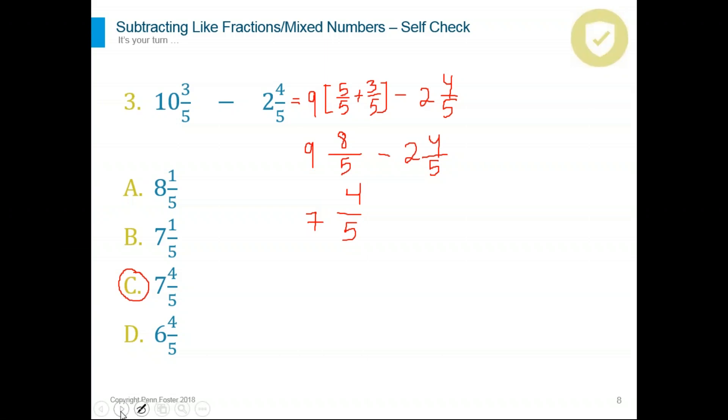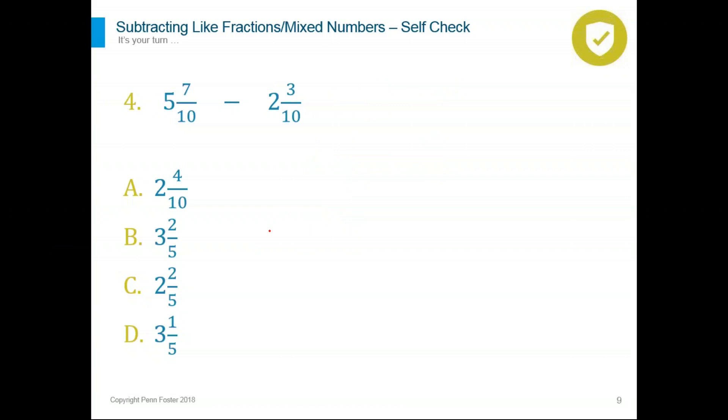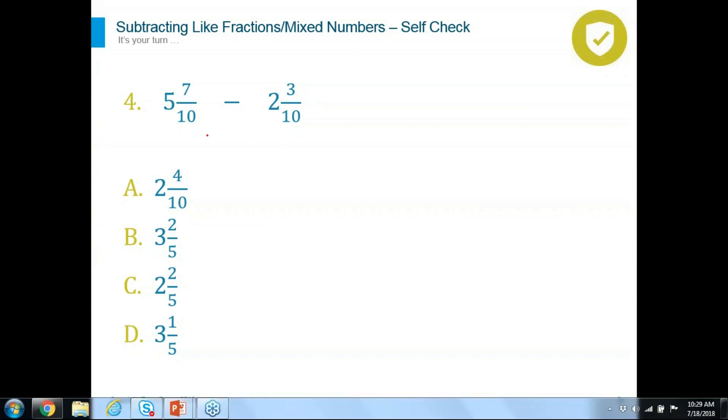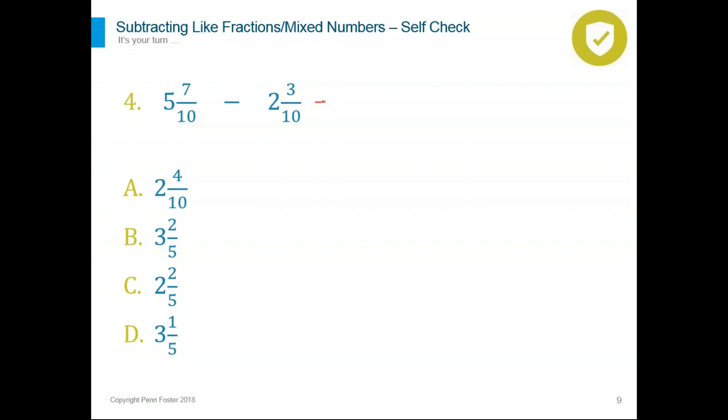Let's go ahead and do another question with subtraction. 5 and 7 over 10 minus 2 and 3 over 10. Borrow or no borrow? What do you think? Look at the numerators. 7 minus 3. Doable or no? What do you think? Is it a simple subtraction problem or you have to borrow? Let's do the question together and see what the answer would be for this subtraction problem. Again, common denominators, that's good. I have 7 minus 3. Yes, we can do that. So this is a simple subtraction. No borrowing is needed. So I just can go with the easy way. No borrowing.